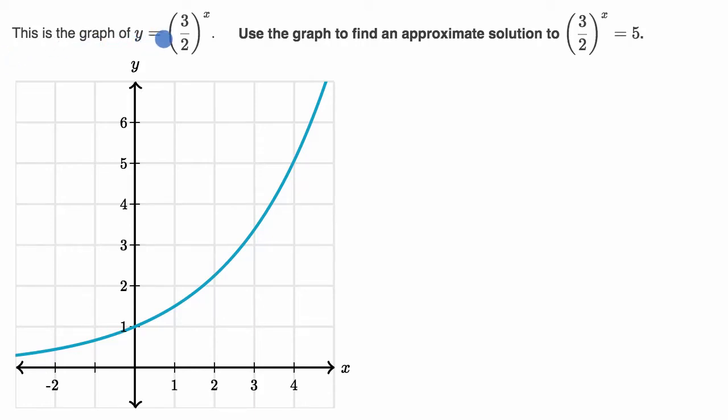We're told this is the graph of y equals 3 halves to the x, and that's it right over there. Use the graph to find an approximate solution to 3 halves to the x equals 5. So pause this video and try to do this on your own before we work on this together.